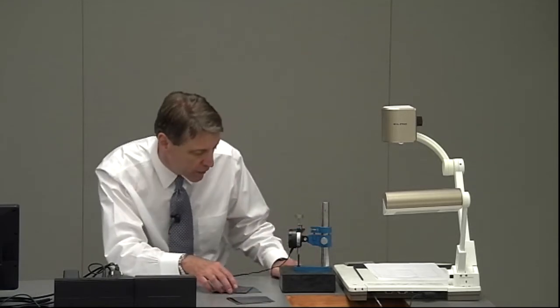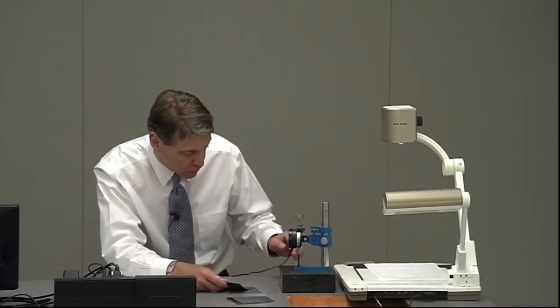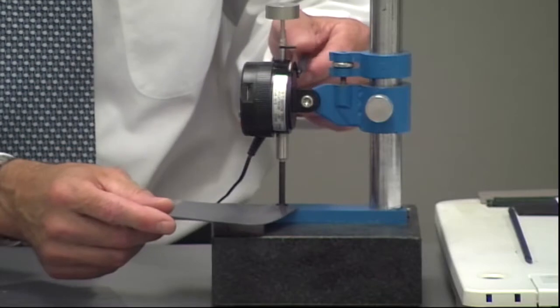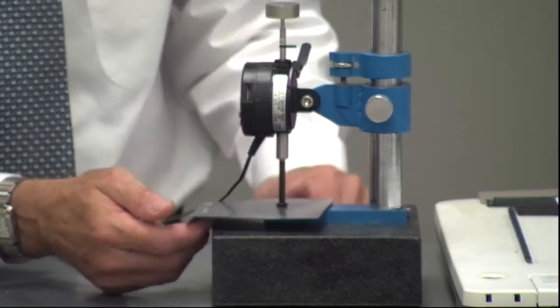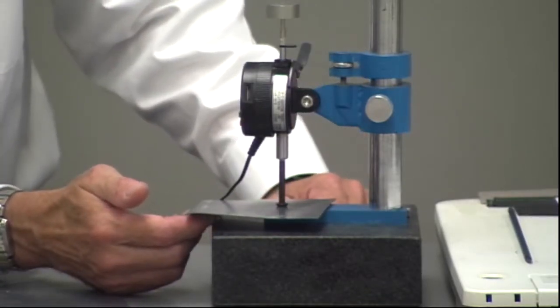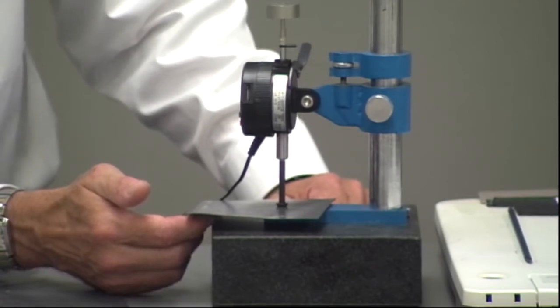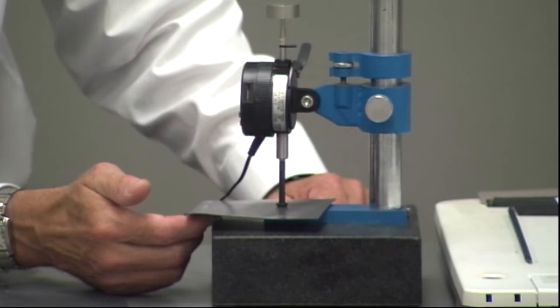That specimen is removed. The digital dial gauge is checked so it returns to zero. The third specimen is inserted. A finger is held just under a corner to keep it steady. Wait five seconds. This thickness is 0.744.